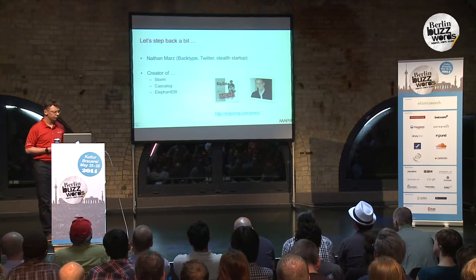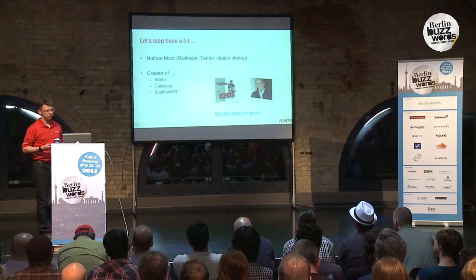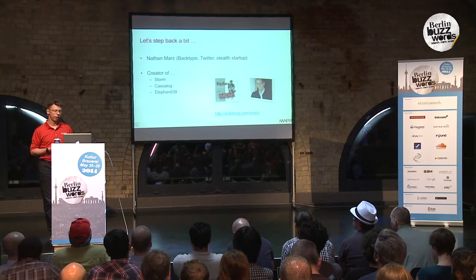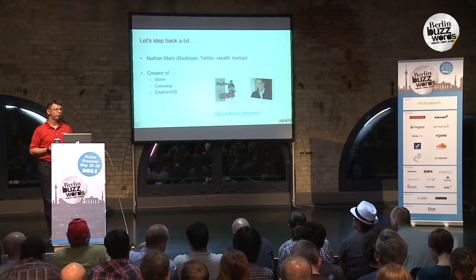Let's step back a bit. The Lambda architecture — at least the name — the idea was probably around for quite some time already. It was established by Nathan Marz, who used to work at Twitter and BackType, and is the creator of many goodies out there — Storm and Cascalog being two examples. He started to write a book, and if you haven't checked it out yet, you might want to. He named it the Lambda architecture, and why that is so, we will see in a minute.